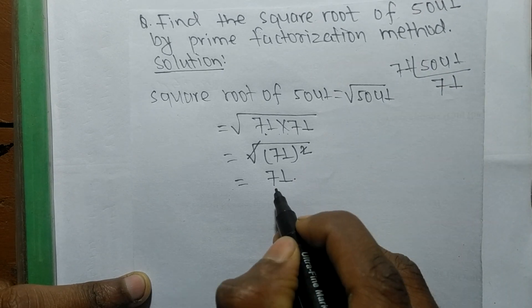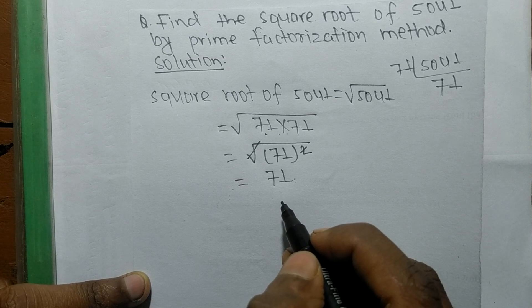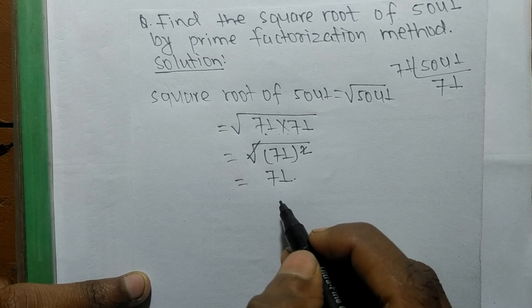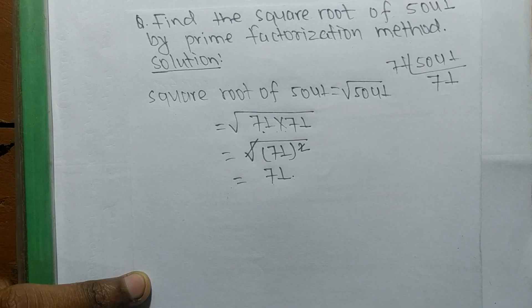Therefore, the square root of 5041 is 71. That's all for today. If you have any questions related to math and science, please comment below and we shall provide a video solution. Thank you.